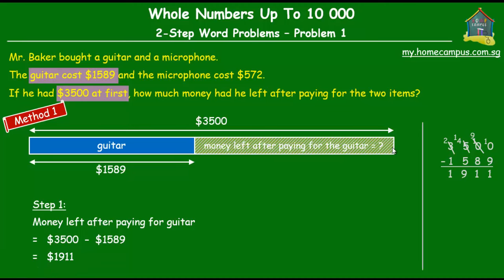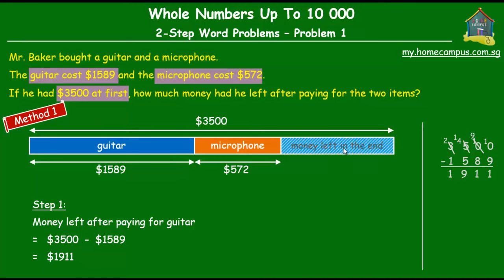From the $1911 he had left, he bought a microphone that cost $572. So: he had $3500 at first, paid $1589 for the guitar and had $1911 left, then paid $572 for the microphone. The money he had left in the end is the blue shaded unit. We'll find out how much that is equal to, and that will give us the final answer.